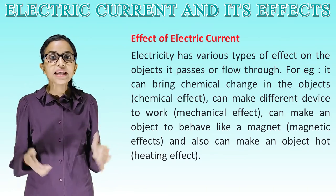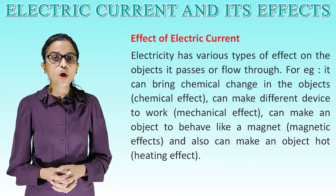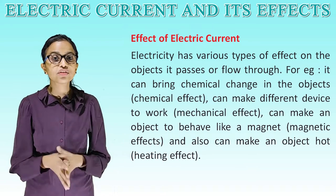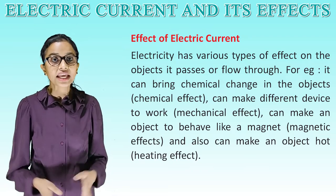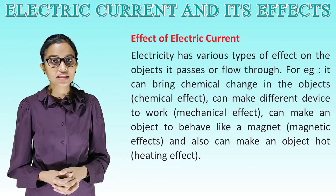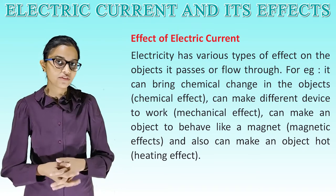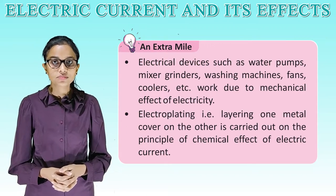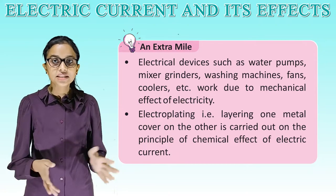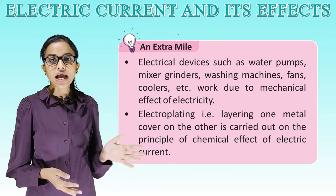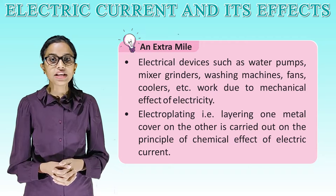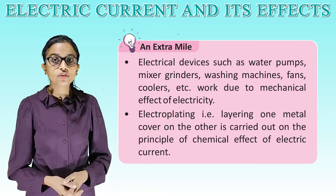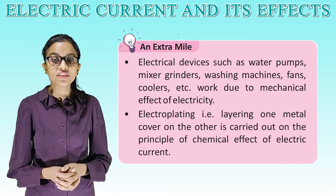Electricity has various types of effects on the objects it passes through. For example, it can bring chemical change in objects — chemical effect; can make different devices work — mechanical effect; can make an object behave like a magnet — magnetic effect; and can also make an object hot — heating effect. Electrical devices such as water pumps, mixer grinders, washing machines, fans, and coolers work due to the mechanical effect of electricity. Electroplating, that is, covering one metal over another, is carried out on the principle of the chemical effect of electric current.